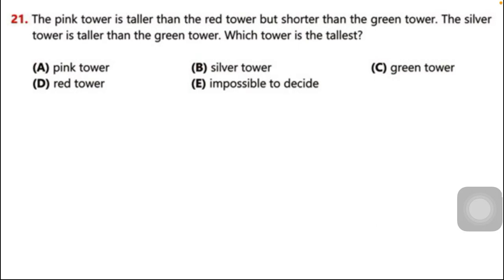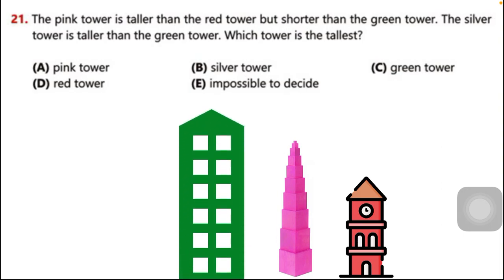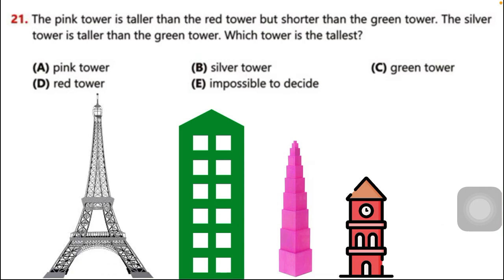Moving to the solution: the pink tower is taller than the red tower but shorter than the green tower. You can easily check which one is taller. The next statement tells us the silver tower is taller than the green tower.